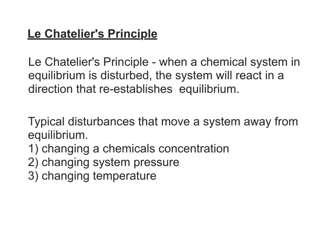There are several disturbances we're going to cover in this video that will move a system away from its equilibrium position. The first one is if we change the concentration of some of the chemicals while the system is at equilibrium. A second one is if the system pressure is changed, which results in a change in concentration, mostly by changing the volume of the system. Finally, we'll discuss what happens if we change the temperature of a system in chemical equilibrium.